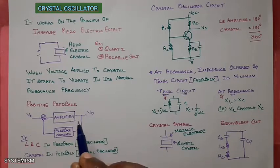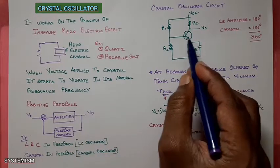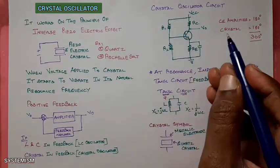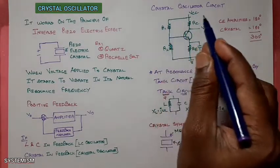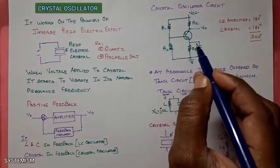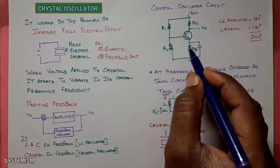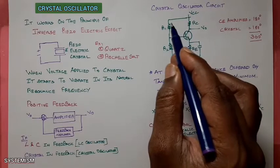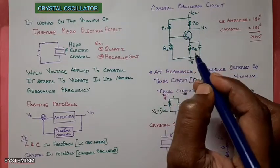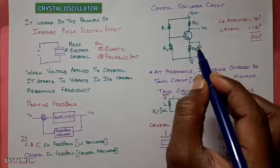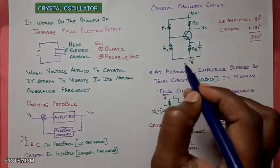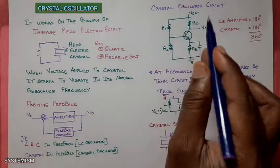Now we will take this amplifier. This is a general amplifier you can draw at any time. If someone asks you to draw an amplifier, you can draw this circuit. This is called a common emitter amplifier in a voltage divider bias configuration. Mostly, if anyone says amplifier, this circuit should come in your mind.